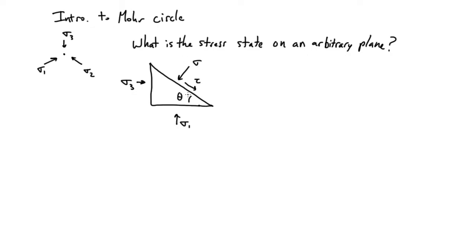The question that the Mohr's circle answers is: if we know sigma 1 and sigma 3, we can quickly estimate what the shear stress tau and the normal stress are for any angle theta.